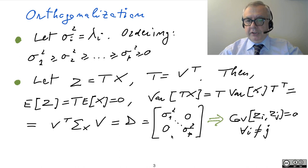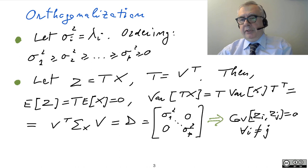And of course, this means that the covariance terms are all zero, because the extra diagonal terms are zero, meaning that the covariance between Zeta I and Zeta J, when I is different from J, is equal to zero. So this is a way to orthogonalize.